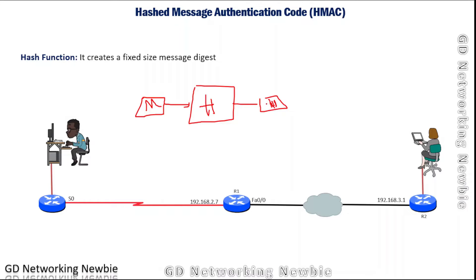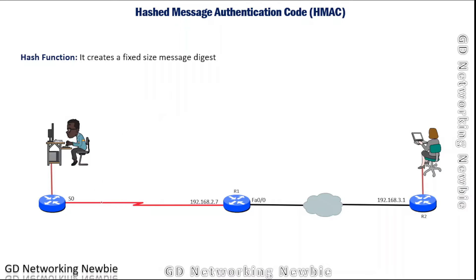We discussed this in our previous video, and today we are going to use the same hash function for HMAC, which will give us not only integrity of the message but also authentication — identifying who the actual sender is. When we are only trying to ensure integrity, we verify that the message received is the same as what was sent, but we are not verifying who is actually the sender. The message may be coming from any user, such as user C or user D.